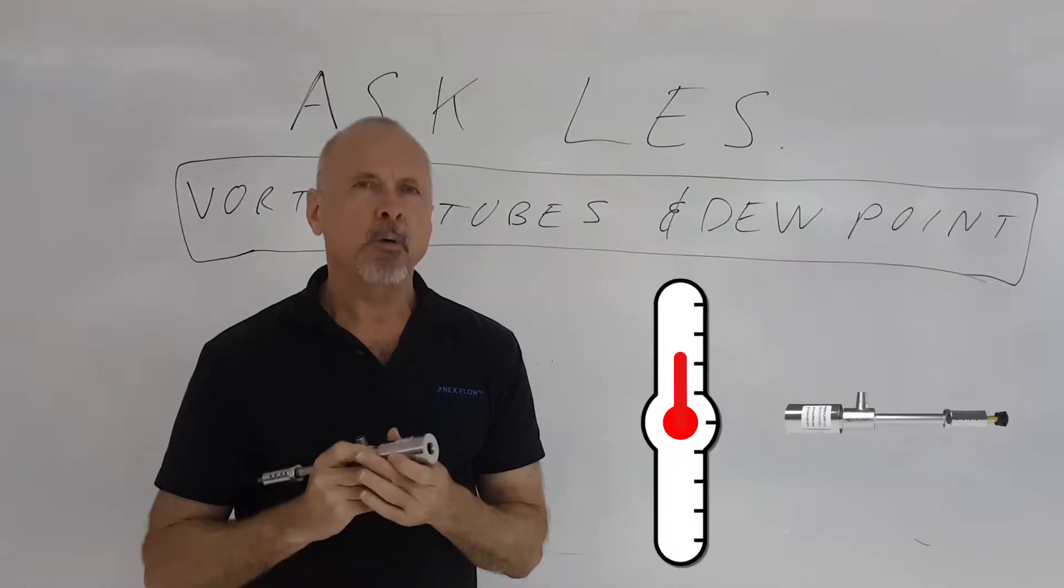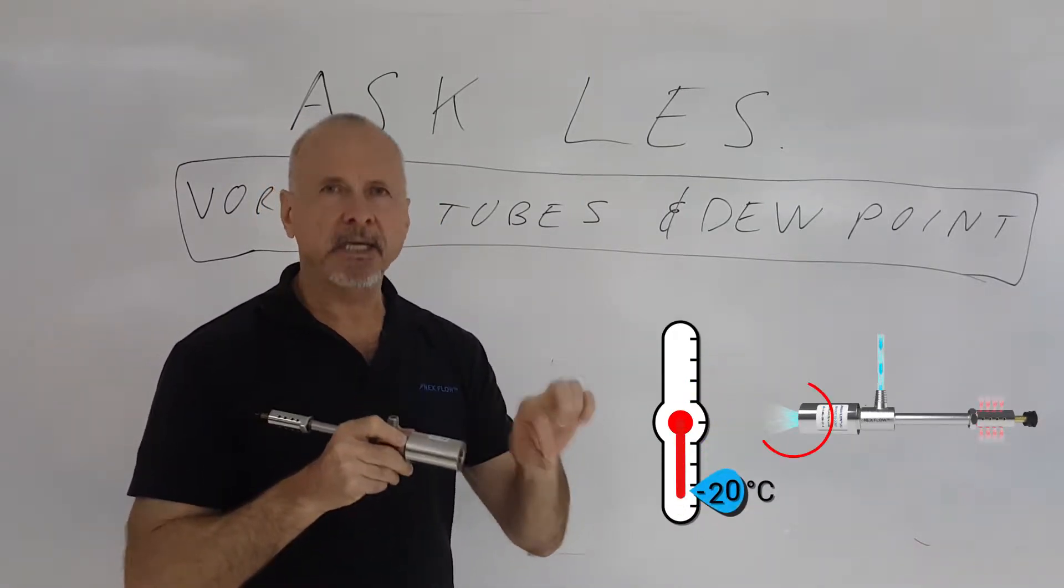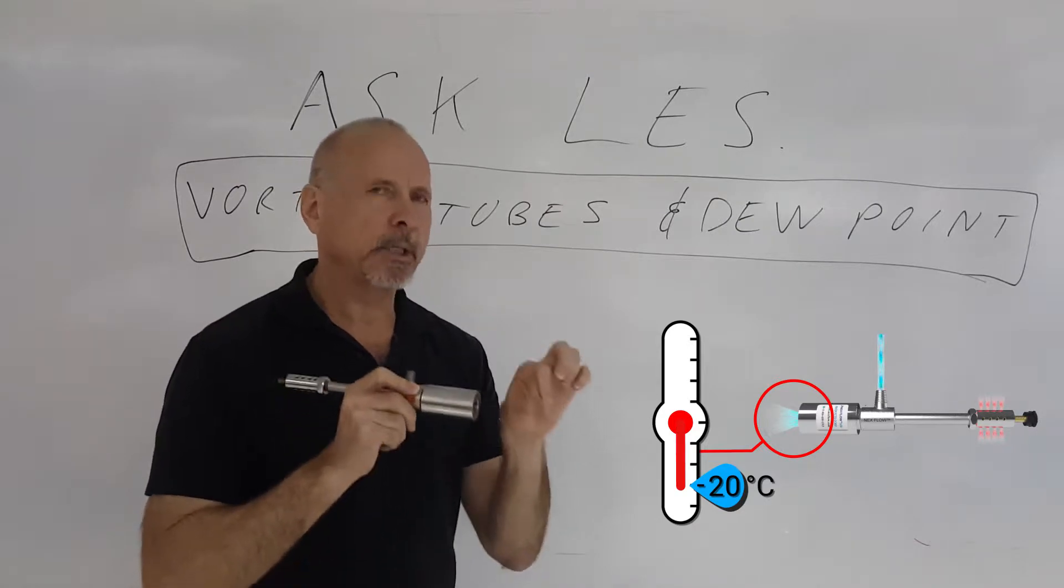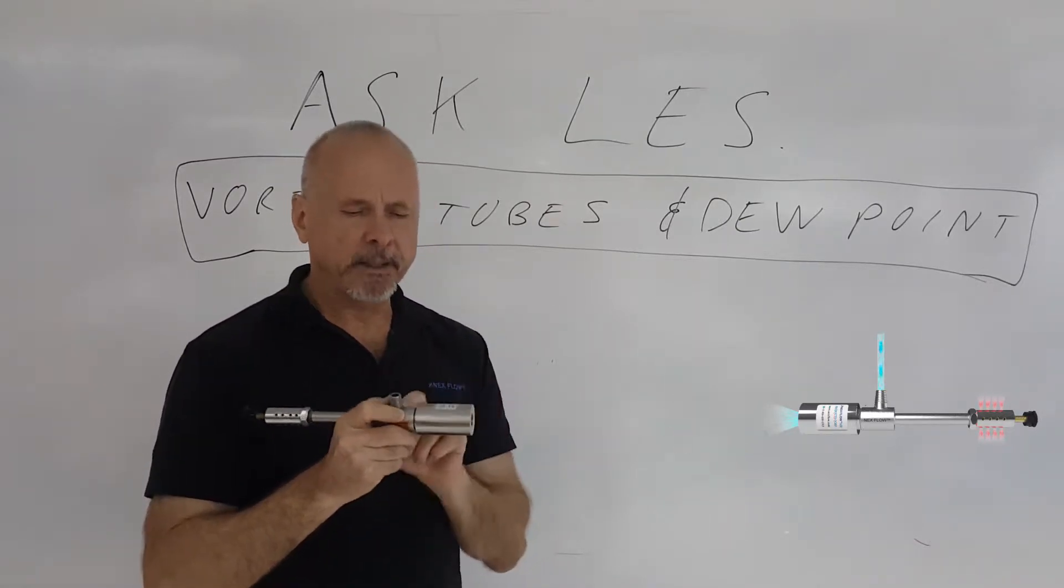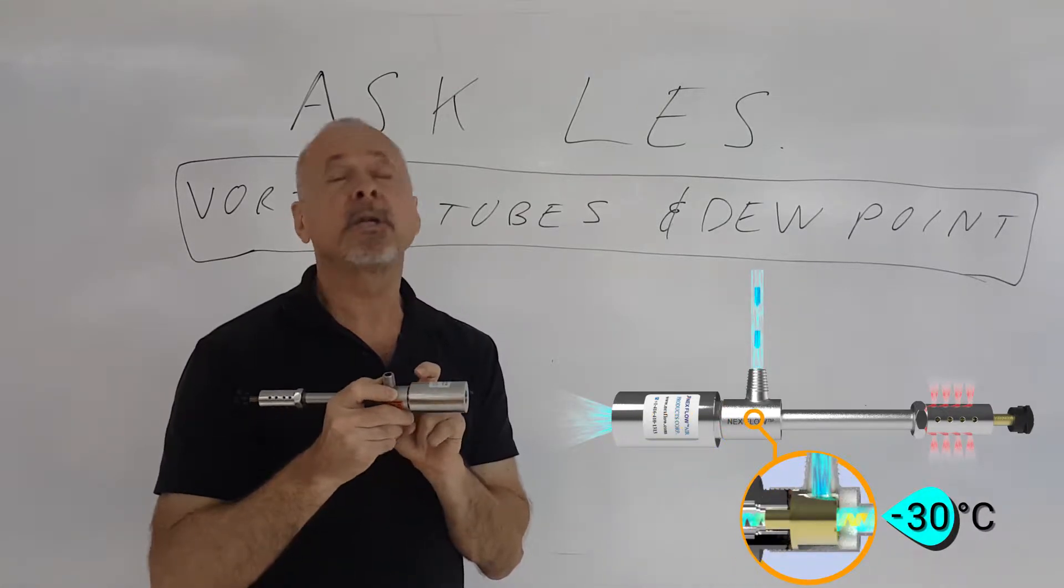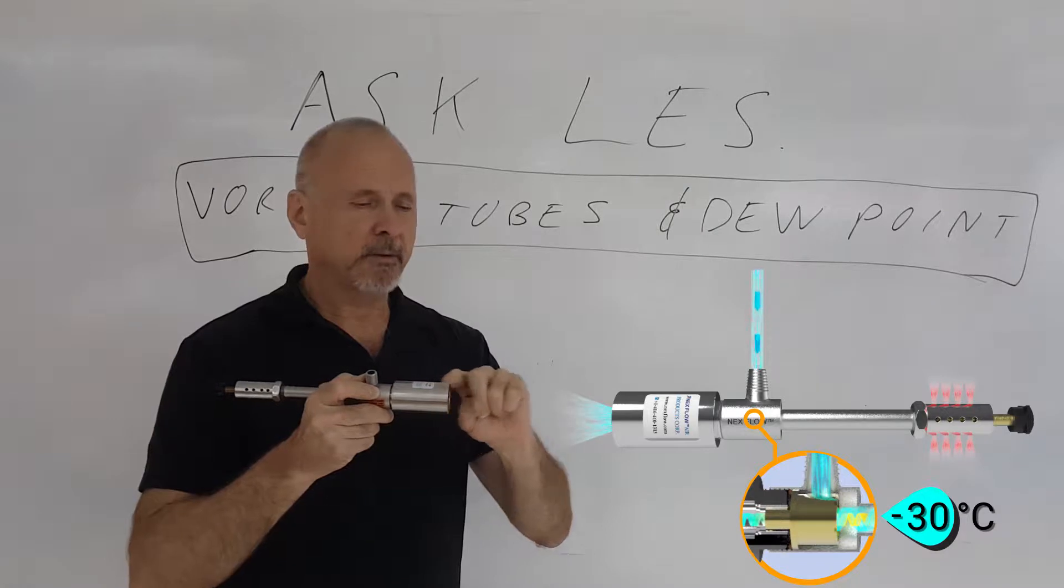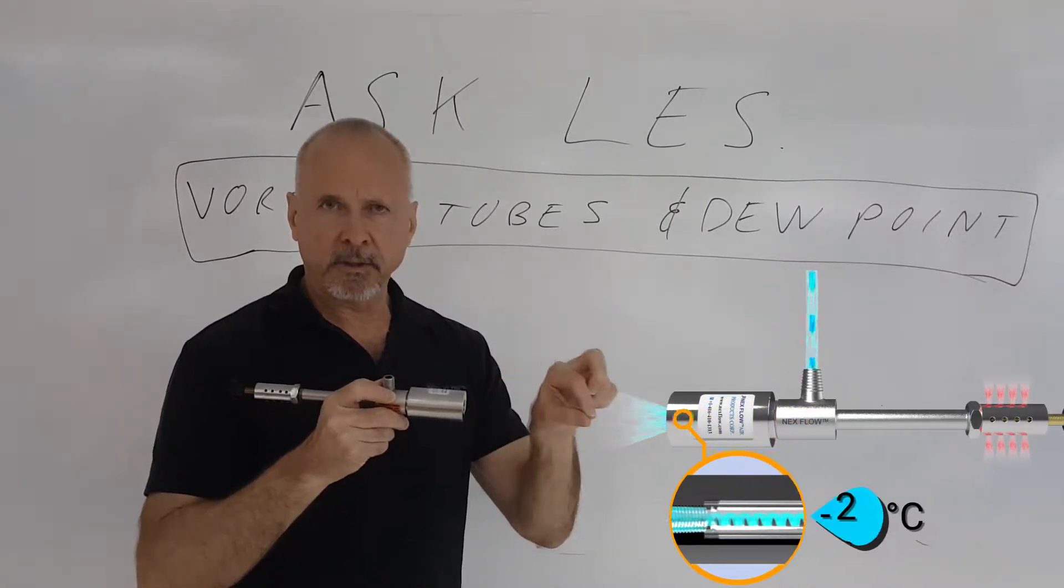This customer required at his product minus 20 degrees Celsius for that particular application, which meant that inside the vortex tube it was even colder, maybe even minus 30 degrees Celsius, because there was some warming as the cold air traveled to the part through the delivery hose.